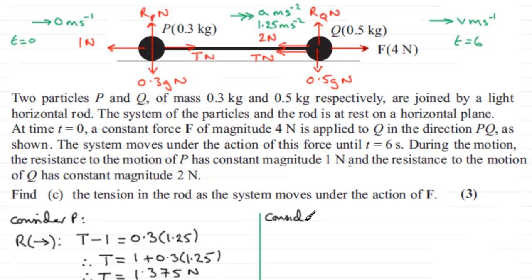And if we do that, again, we want to resolve in the direction of motion. So we'll resolve to the right. Looking at the overall force acting on Q, which is going to be 4 newtons. That's in the positive sense. Minus the 2.